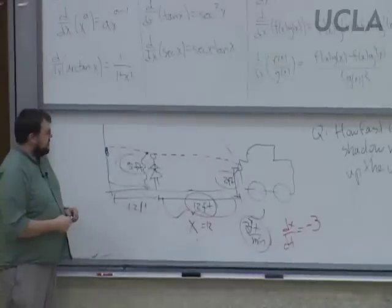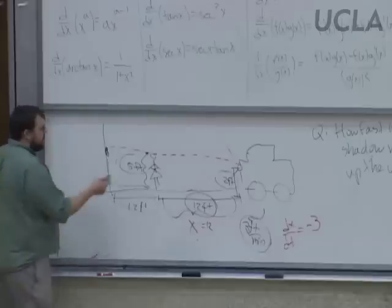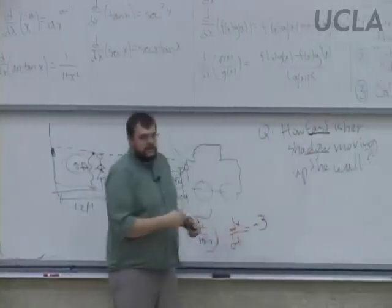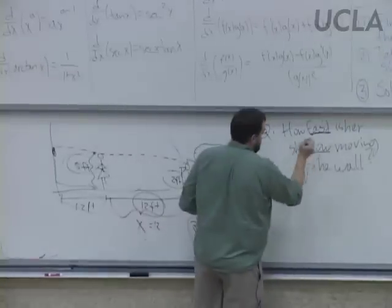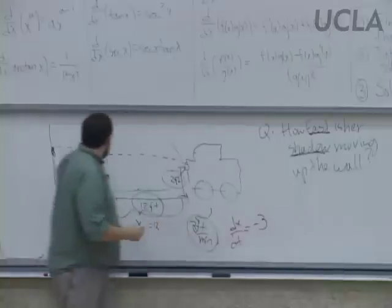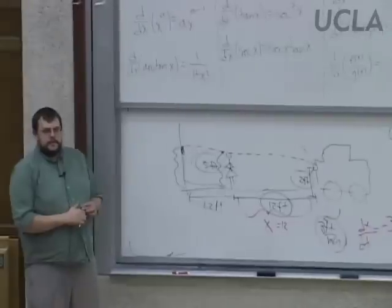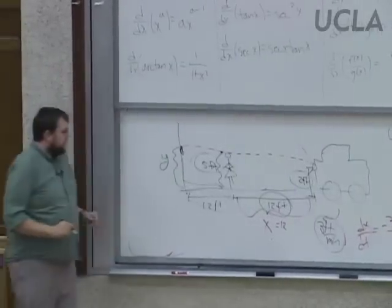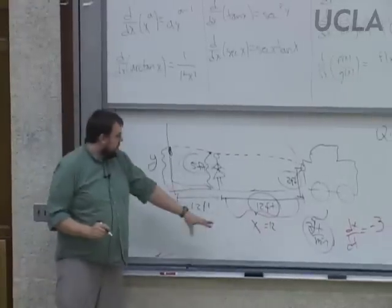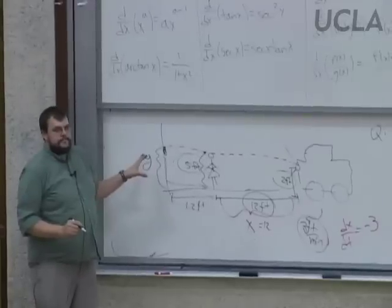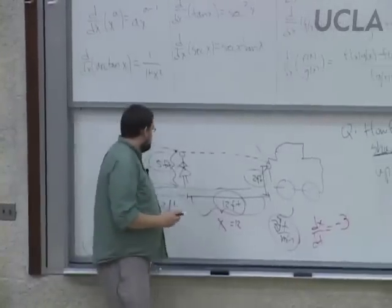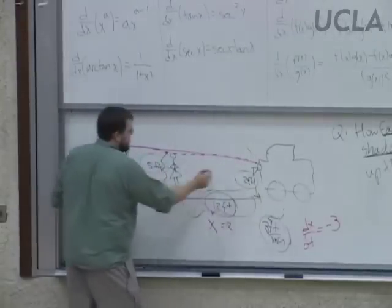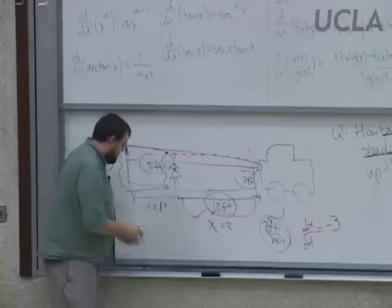The other quantity we need: we're looking for how fast the shadow is moving — that's a rate, a derivative. Assign y to the height of the shadow on the wall. We want to find dy/dt, so now we need to relate x to y.